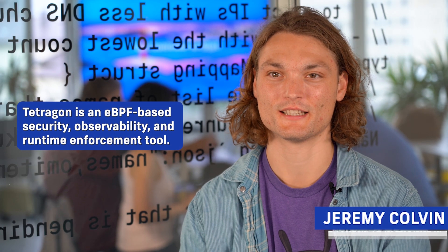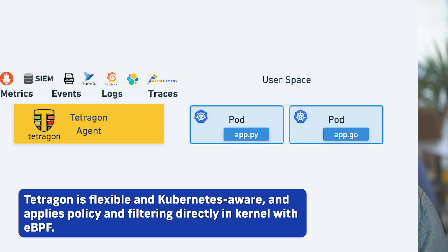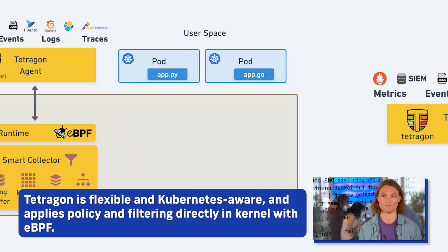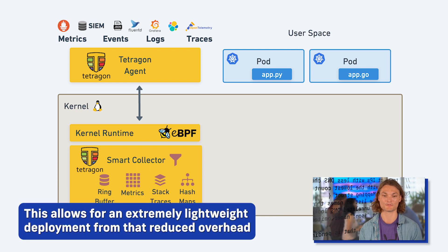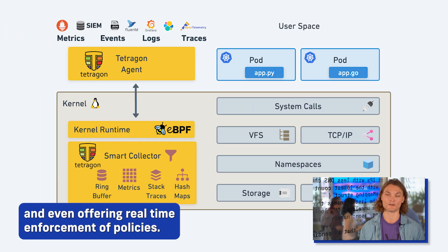What is Tetragon? Tetragon is an eBPF-based security observability and runtime enforcement tool. It is flexible and Kubernetes aware, and applies policy and filtering directly in the kernel with eBPF. This allows for an extremely lightweight deployment with reduced overhead, while still tracking powerful and granular kernel events and even offering real-time enforcement of policies.